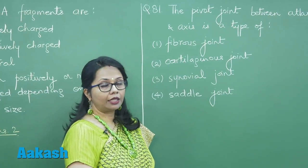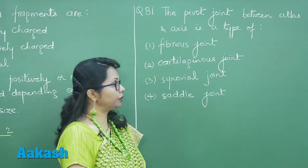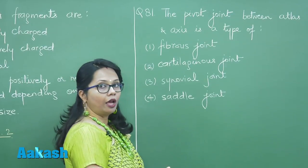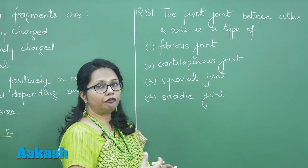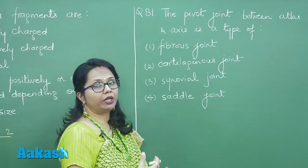Atlas and axis, those are the first and second vertebrae respectively and this joint is a synovial joint where between the two bones there is a synovial cavity filled with a synovial fluid allowing more movement than in comparison to any fibrous or cartilage joint.